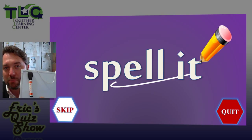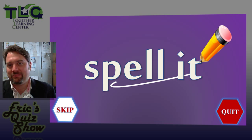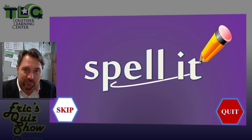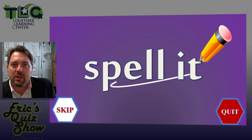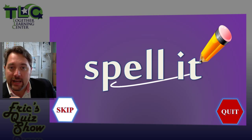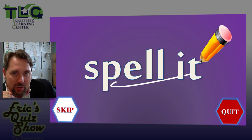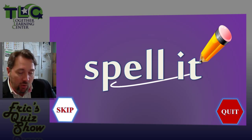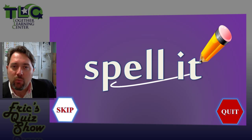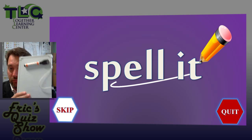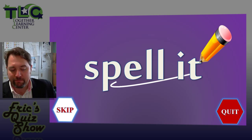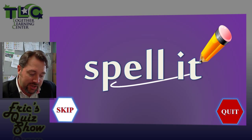You should find it somewhere close to your buzzer. So when you see this Spell It question come up, please find your whiteboard — you will need it. In this type of question, a word written in katakana will appear, and you will have to look at that word and then write that word in English on your whiteboard.